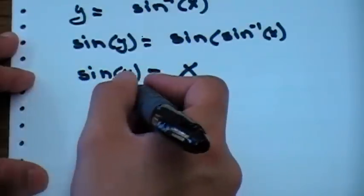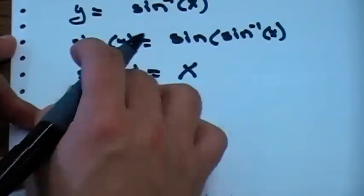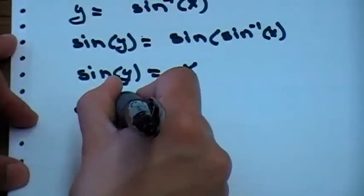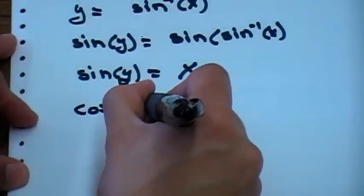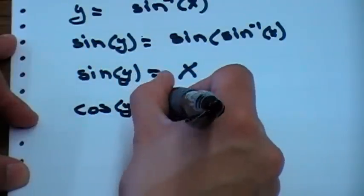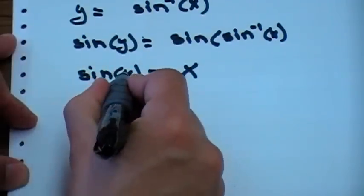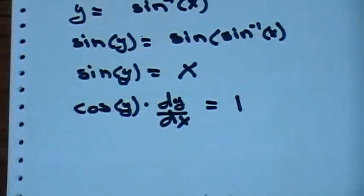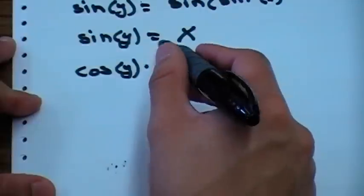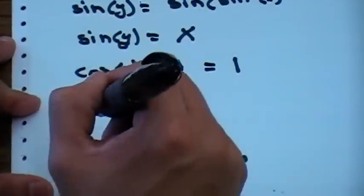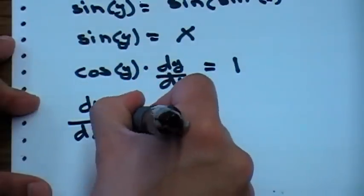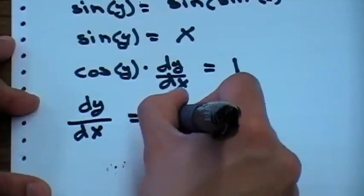Now we're going to take the derivative with respect to x — the sine of y with respect to x. So we're going to get cosine of y times, using the chain rule, times dy/dx to find the inward y, and that will be equal to one. Now we need to leave dy/dx alone, so we're going to divide by cosine of y. So now we can say that dy/dx equals one over cosine of y.